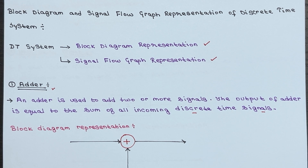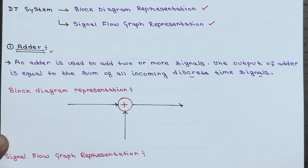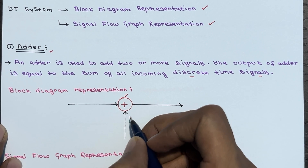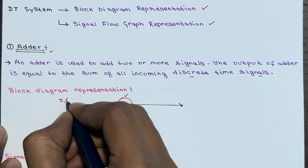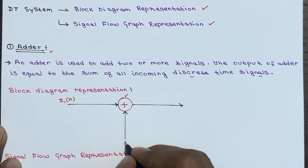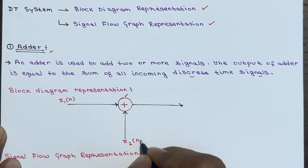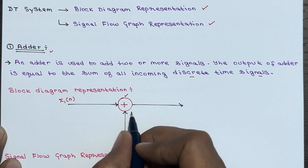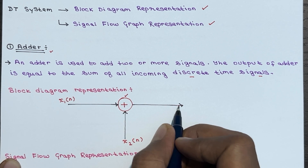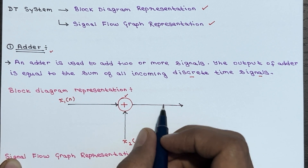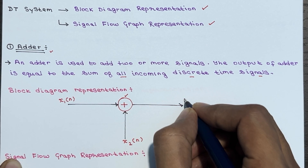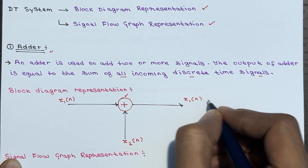Let's take a look at the block diagram representation for the adder. This is your adder component. The incoming discrete time signals are x1 of n and x2 of n — these are the inputs to this adder. The output is equal to the sum of all incoming discrete time signals, so the output will be x1 of n plus x2 of n.